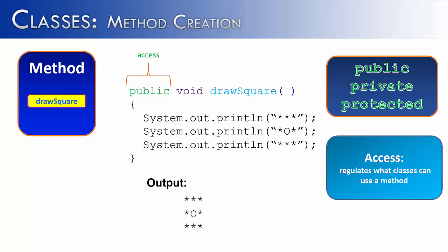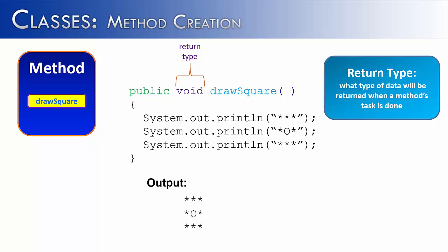Next we have the return type, which means what type of data will be returned when a method task is done. So if you were adding two numbers together that were doubles, a double would be returned to the program. Or if they were two ints, an int would be returned to the program. But in this case I've used void, and void simply means nothing is going to be returned to the program. In another video we're going to take a harder look at return types. But for right now, just understand that that slot is reserved for saying once the method is done, what type of data is going to be returned. Not the data itself, but what type it would be, like int, double, boolean, char, etc.